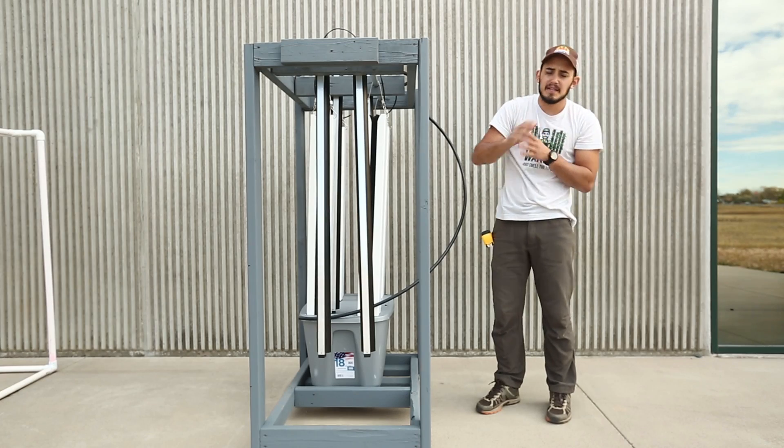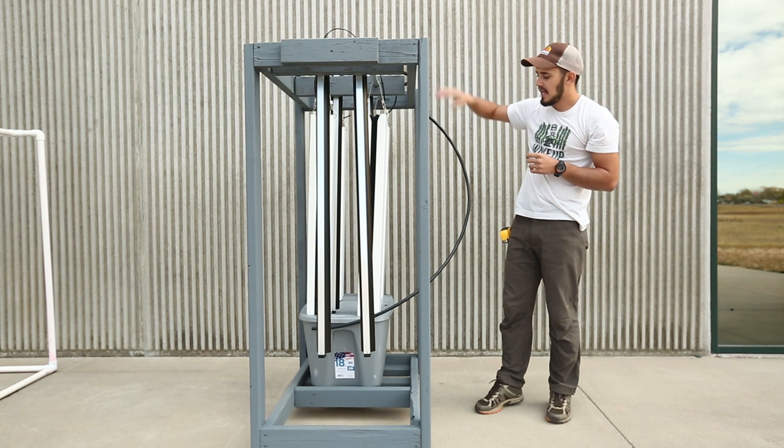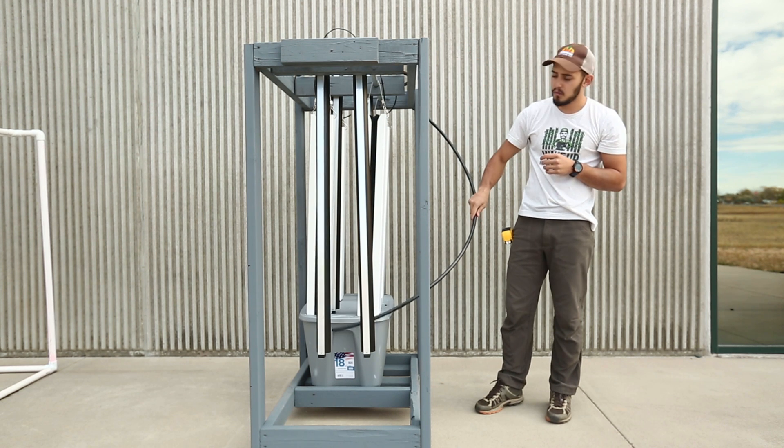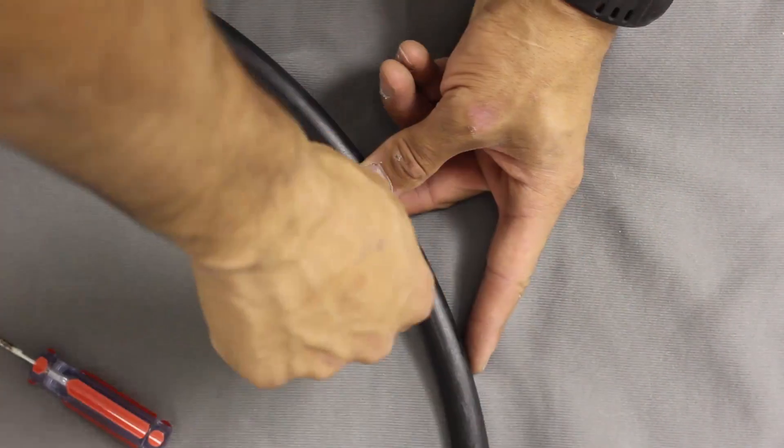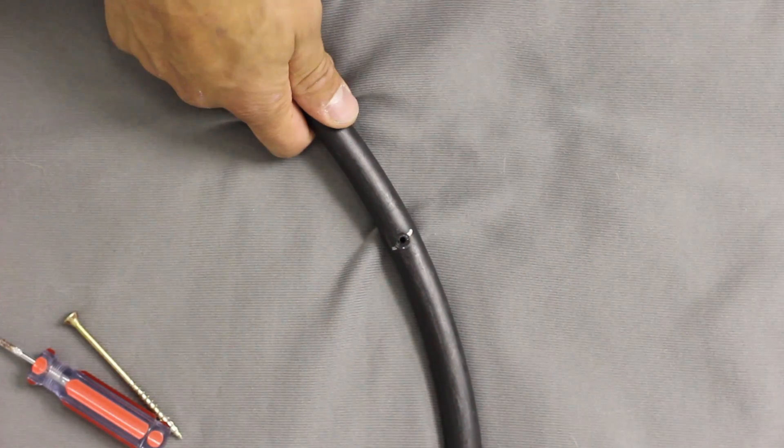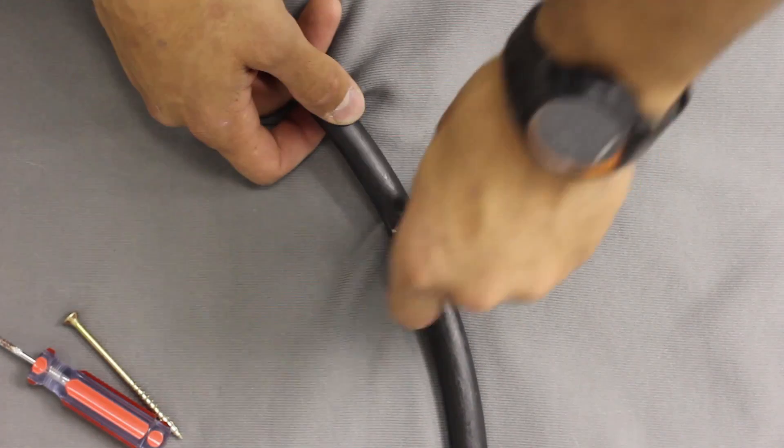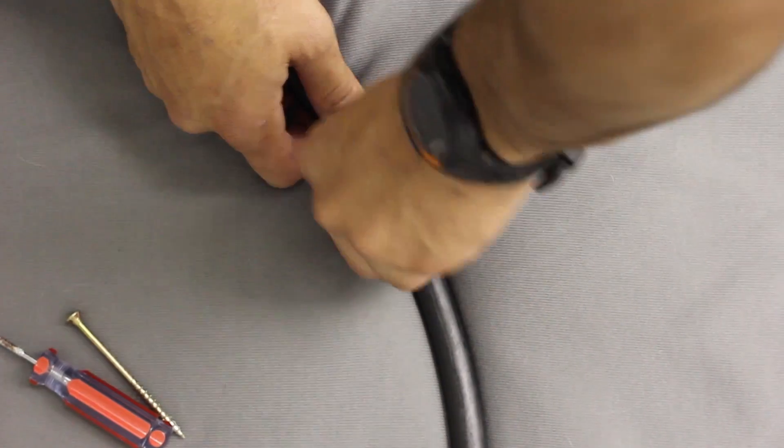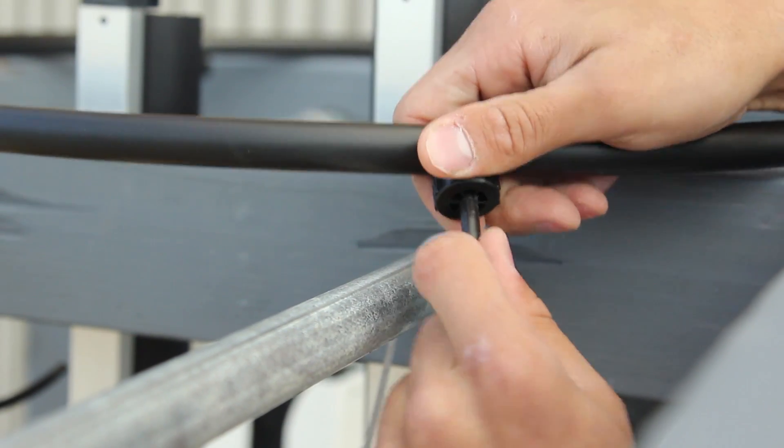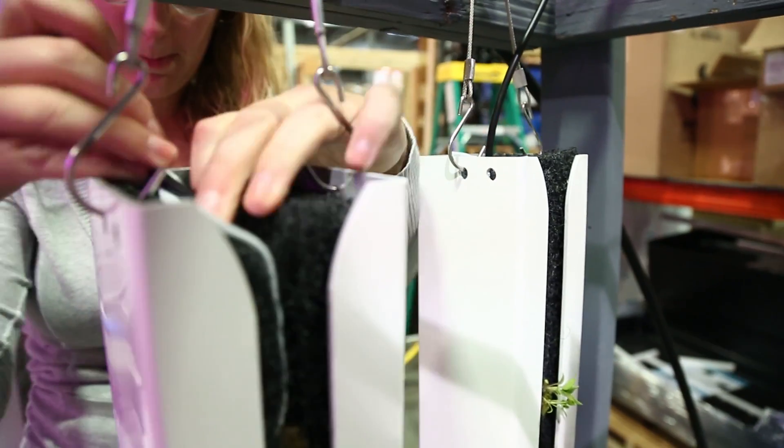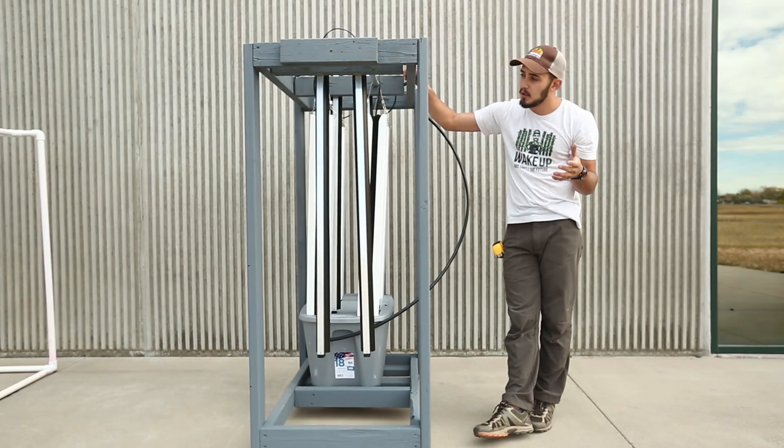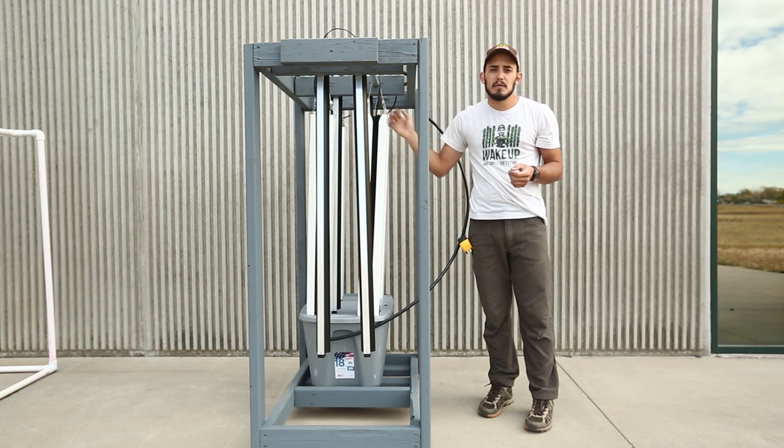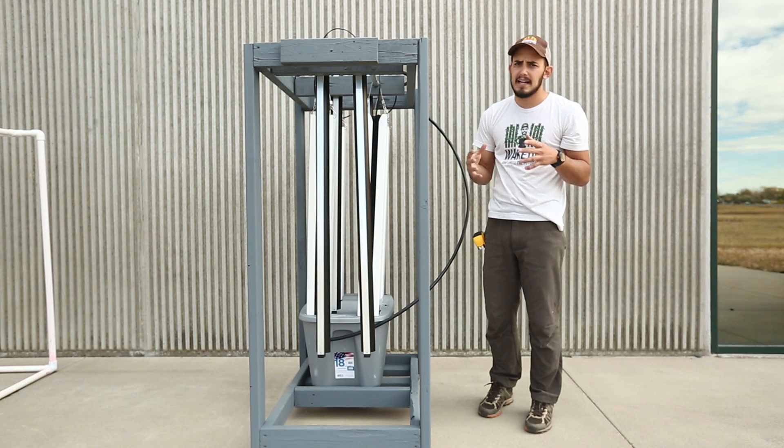So once we have this main line fixed to the top and we know there's enough length that it'll go to our pump, what we've done is we've marked out a spot where we can punch a button dripper into that black poly tubing, and then from that button dripper, we've connected 1/4-inch poly tubing and ran that directly into our towers. And the reason that we do that, and we don't just let the button drippers drip into the towers, is one, if it moves, and two, these are positioned really close to our lights and we want to avoid any splash or any water getting on our lights.